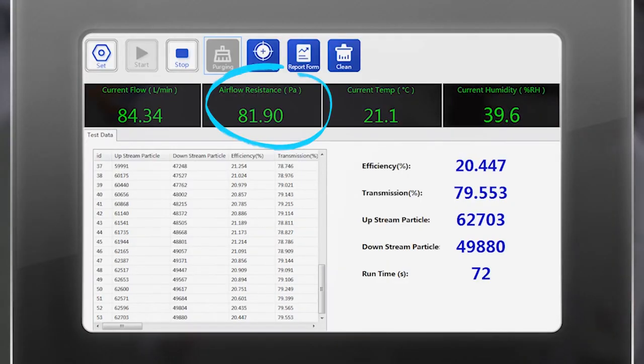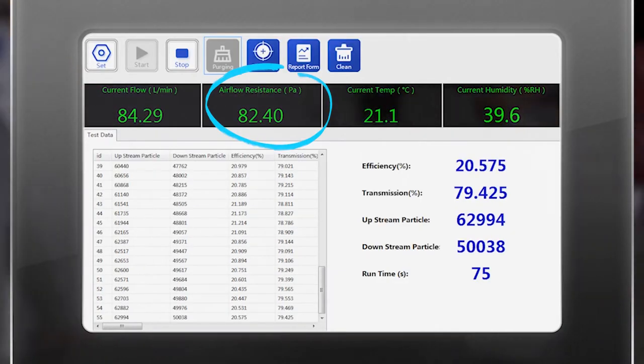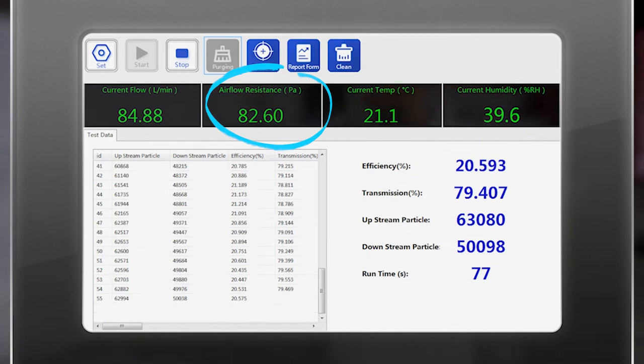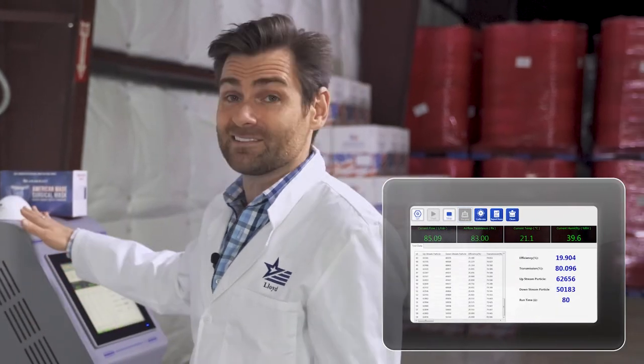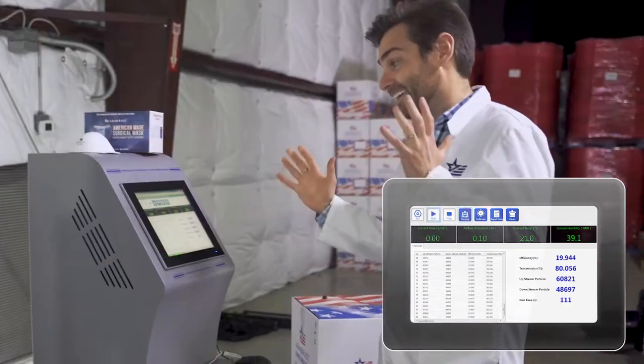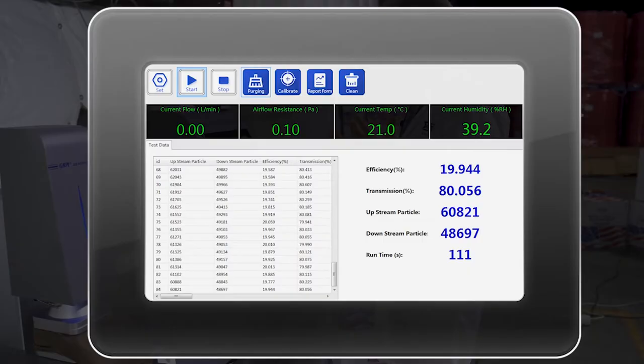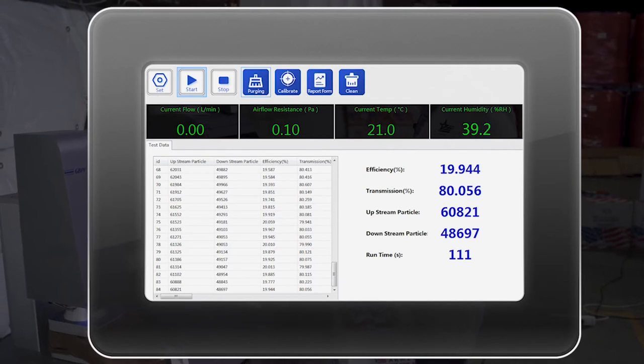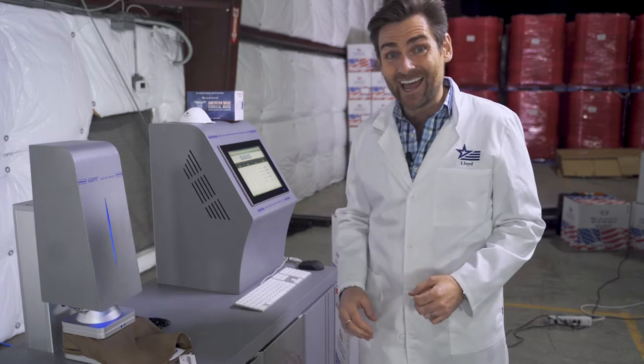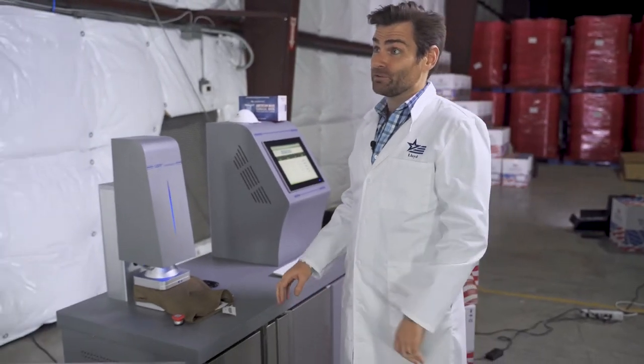Let's look at the breathability. So the airflow resistance is 82 pascals, which is actually pretty high. To be honest, I've seen things test 80, 90 pascals and have a 90% efficiency and it's done. And this takes two minutes to do. And we are at 19.94%. That's pretty bad.